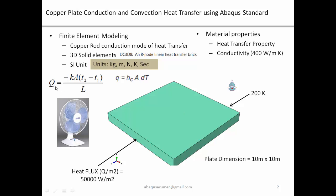For conduction we are going to use Fourier's law: Q = k·A·(dT/dx), where k is thermal conductivity, A is area, and dT/dx is the temperature gradient. For convection the heat transfer mode is Q = h·A·ΔT, where h is the convective heat transfer coefficient.